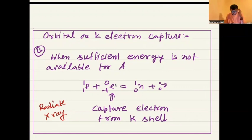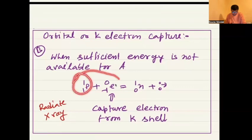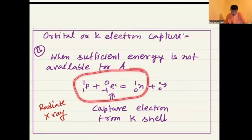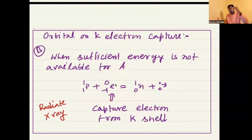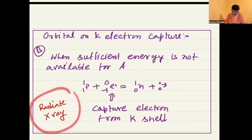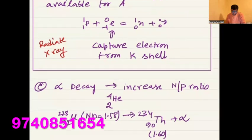Alternatively, an electron from the K-shell is captured by the nucleus. This K-electron capture converts a proton into a neutron. The process releases a large amount of energy in the form of X-rays. The K-electron is captured and X-rays are emitted as a result.